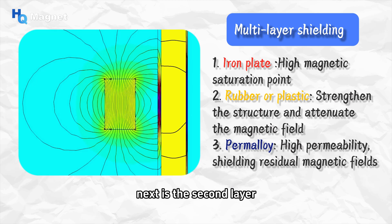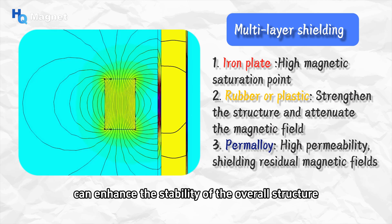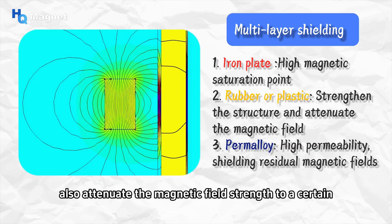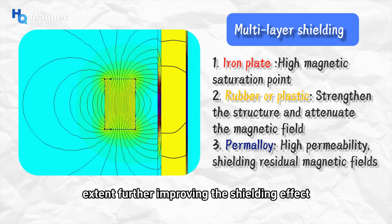Next is the second layer. We filled it with materials of low magnetic permeability, such as plastic or rubber. Doing so, on the one hand, can enhance the stability of the overall structure. On the other hand, it can also effectively prevent the magnetic field overflowing from the saturated iron plate from being directly transferred to the outermost shielding material. Not only that, this layer can also attenuate the magnetic field strength to a certain extent, further improving the shielding effect.